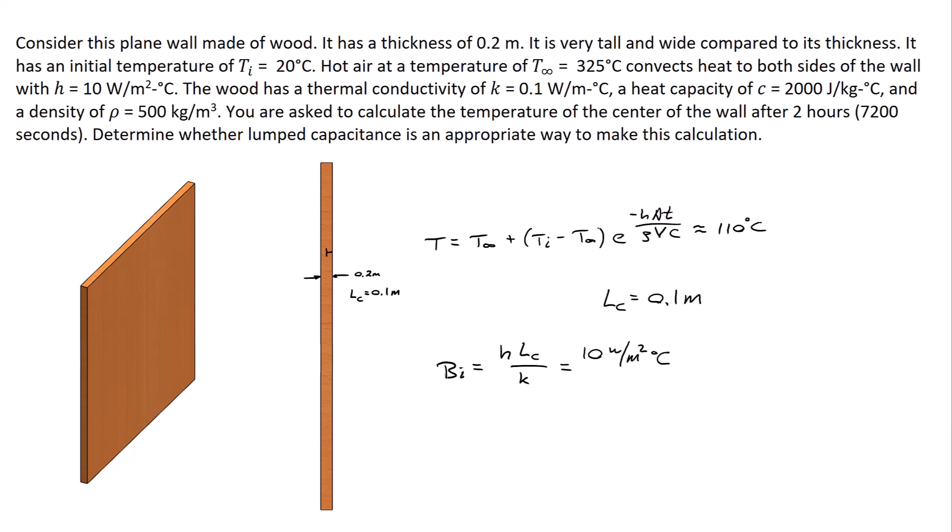So using that to calculate our Biot number, we've got H, 10 watts per square meter degrees C, multiplied by 0.1 meters divided by the thermal conductivity of the wood, which is 0.1 watts per meter degrees C.